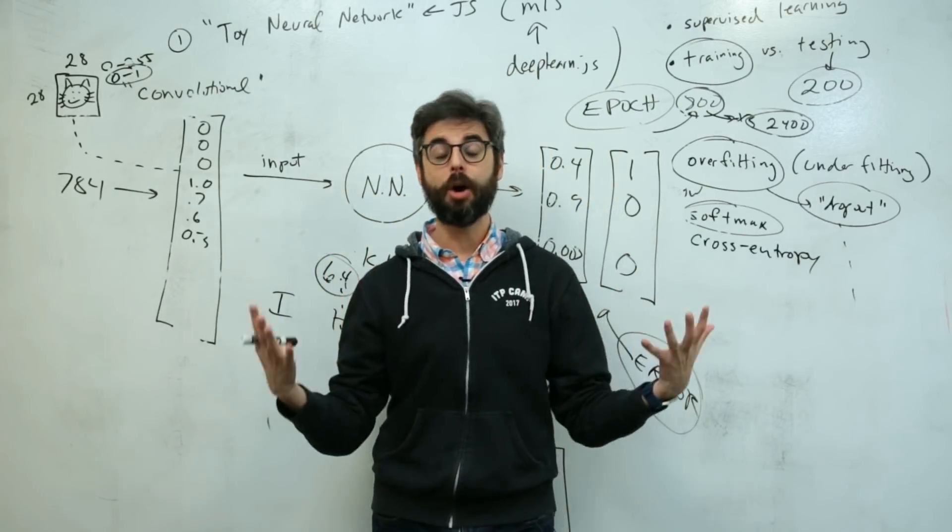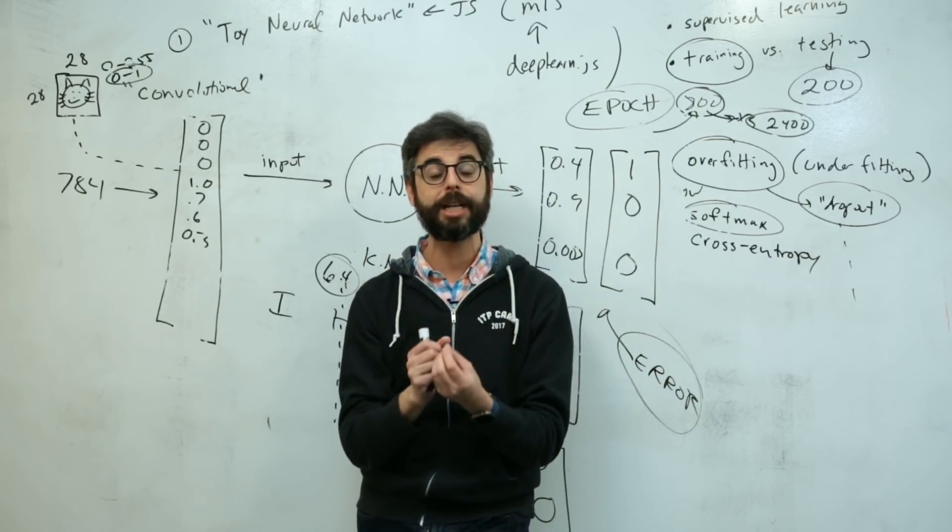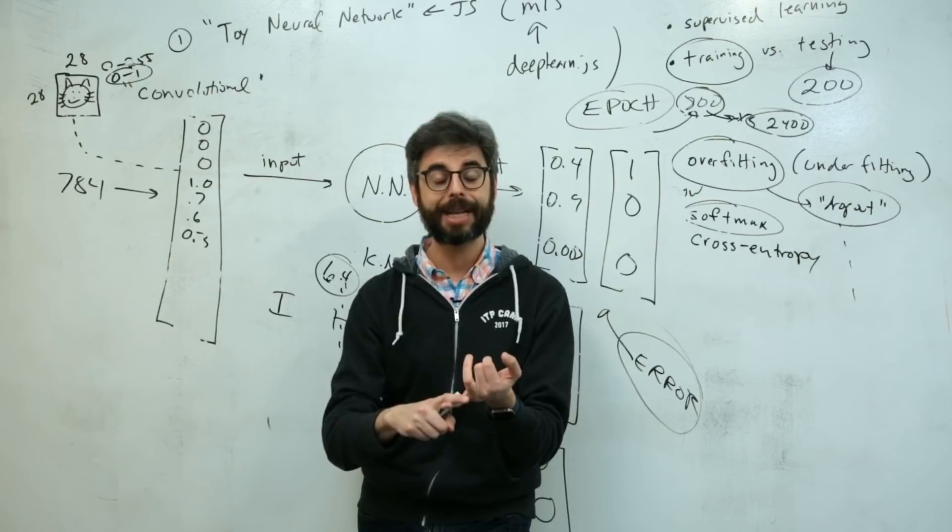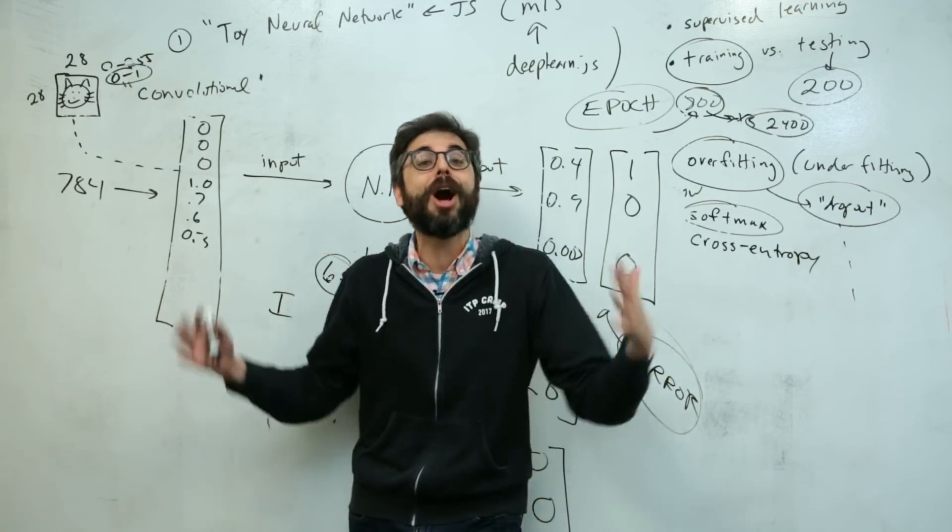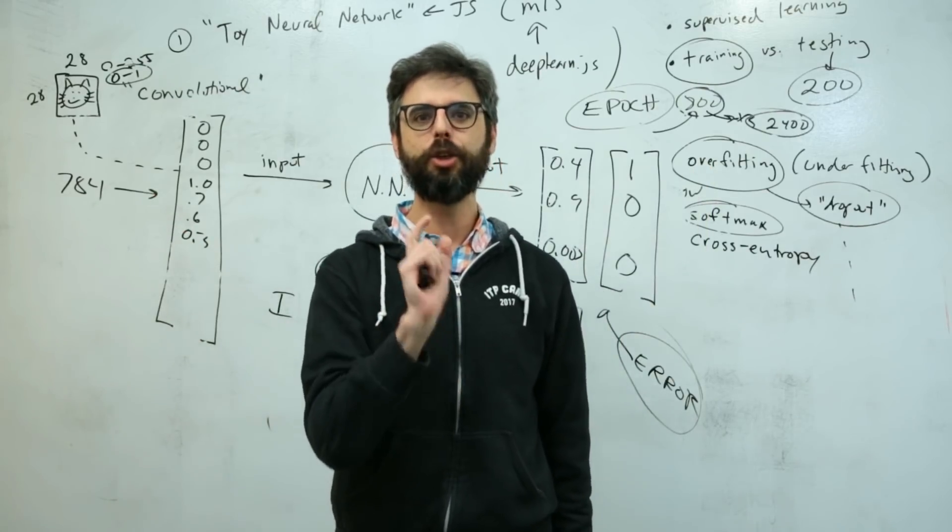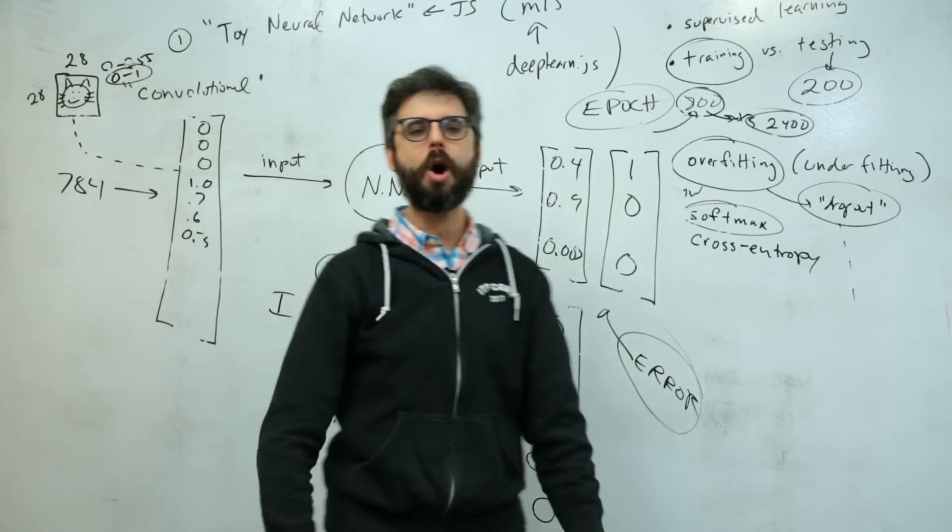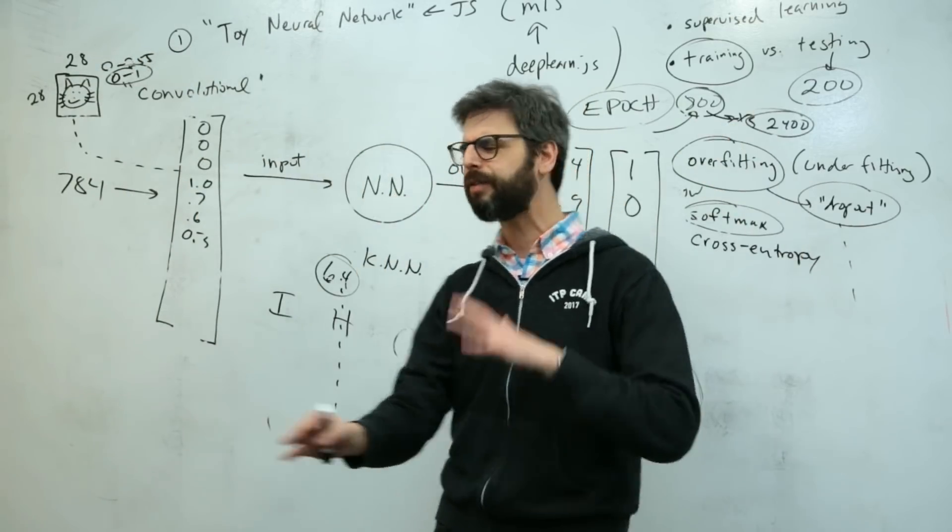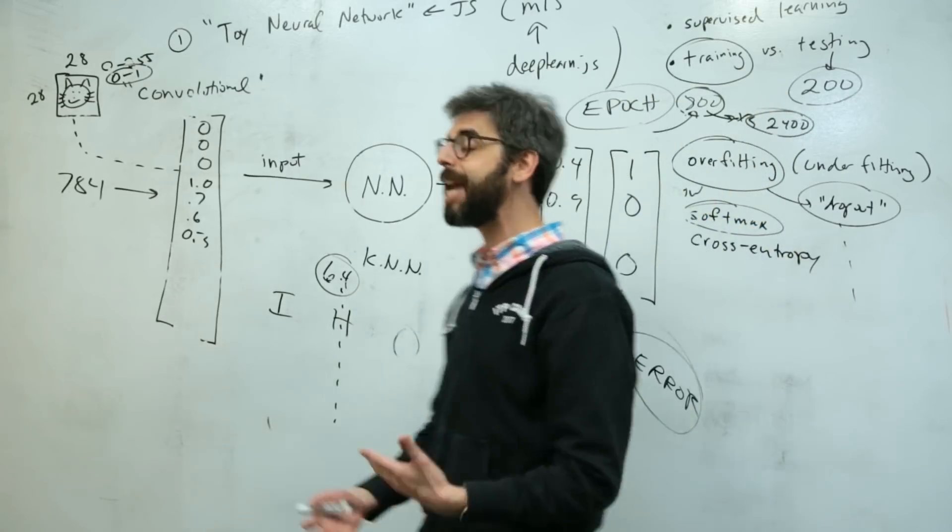While this is the most well-known and probably most common and standard technique for training a neural network—backpropagation with gradient descent—there are many other ways. What if we just threw away all of that calculus math and backpropagation?